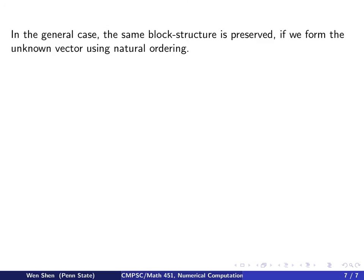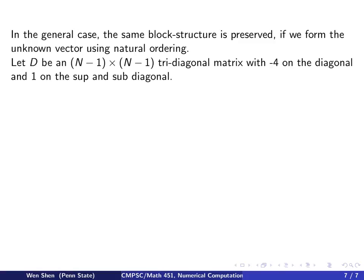Now in the general case where N is another number, say a bit bigger—6 or 7 or 10 or 100—the same block structure is preserved if we form the unknown vector using natural ordering.